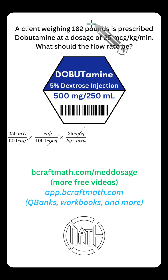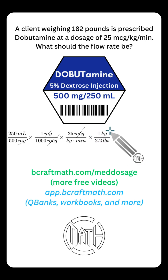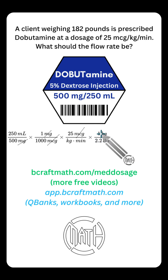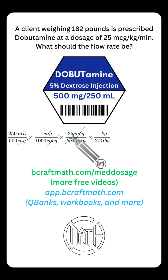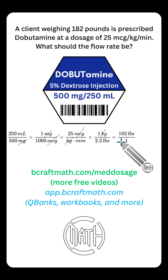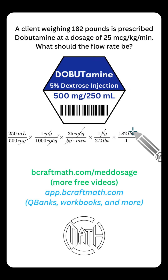The client's weight is in pounds. And if you've followed my videos with dimensional analysis, I do not do any calculations on the calculator until I meet my goal. So I'm throwing in the conversion to convert from kilograms to pounds, which allows us to cancel out our kilograms. Since we converted to pounds, we can now bring in the client's weight of 182 pounds.